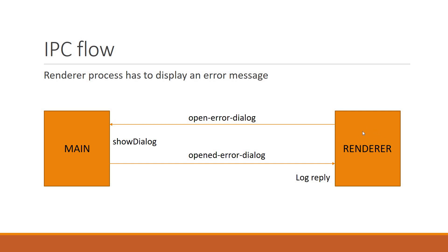So that is the basic IPC flow in Electron: the renderer process sends out an event to the main process, the main process calls the native desktop APIs, and then the main process can reply back to the renderer process, which can listen to that particular event and perform some operations. With this understanding, let's take a look at the demo.